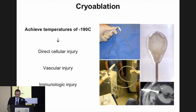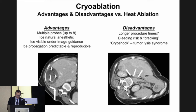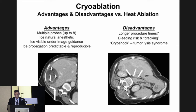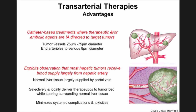Cryoablation uses cooling rather than heat to destroy tumors and is used in many organ systems, but very rarely in the liver. It has advantages — the ice ball is visible and ice acts as a natural anesthetic — but in the liver there are increased risks of bleeding, liver cracking, and a condition called cryoshock based in tumor lysis, which can make patients very sick. For these reasons, cryoablation has largely fallen out of favor in the liver.